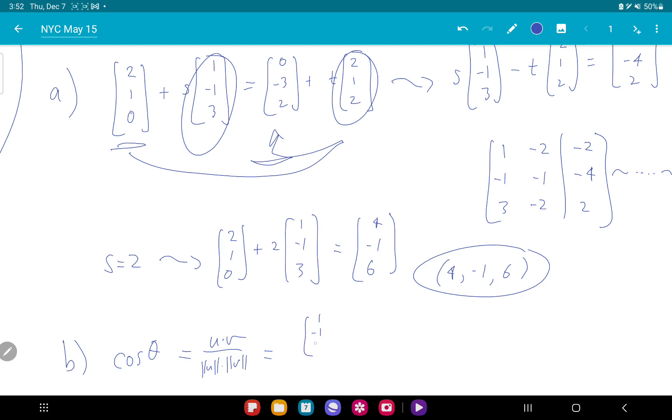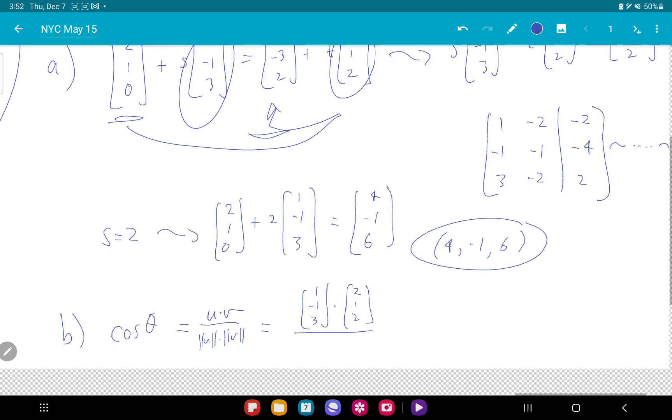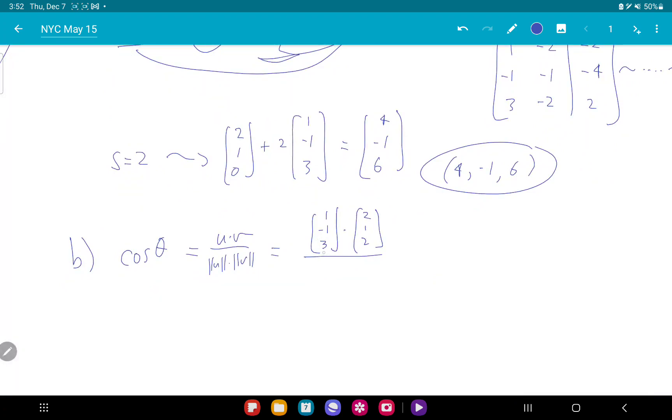u dot v over length of u times length of v. I go (1, -1, 3) dot (2, 1, 2), all over the length of u is 1 plus 1 plus 9 under the square root, then 4 plus 1 plus 4. On top I get 2 minus 1 plus 6, and that's 7 over 3 root 11. There's my cosine.